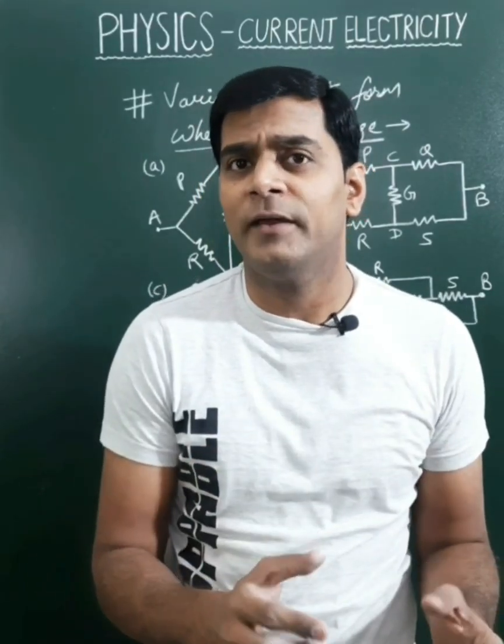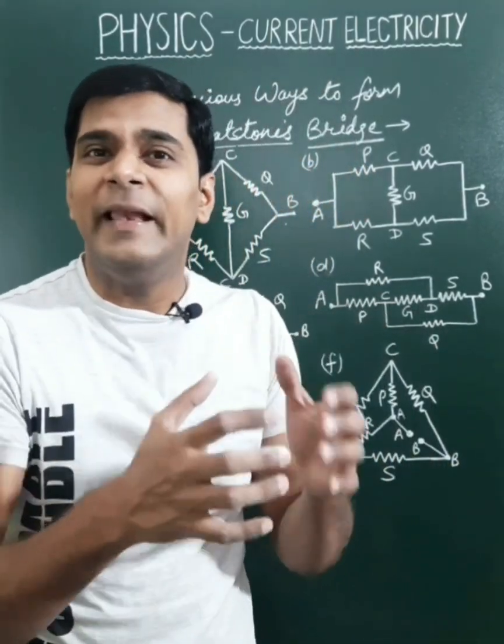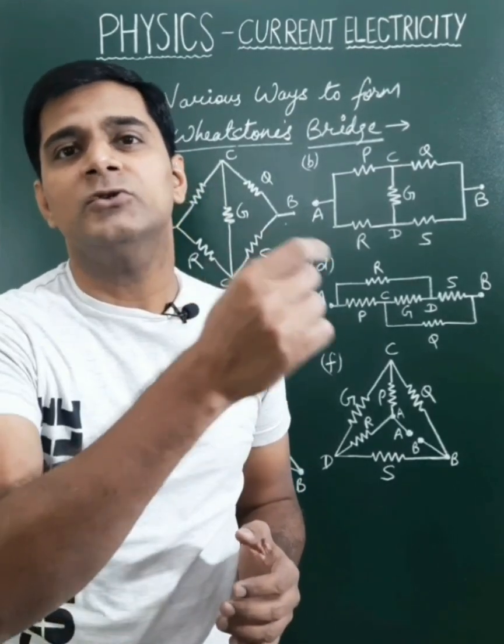The Wheatstone's bridge is used to find unknown resistance with a balancing condition P upon Q equals to R upon S.